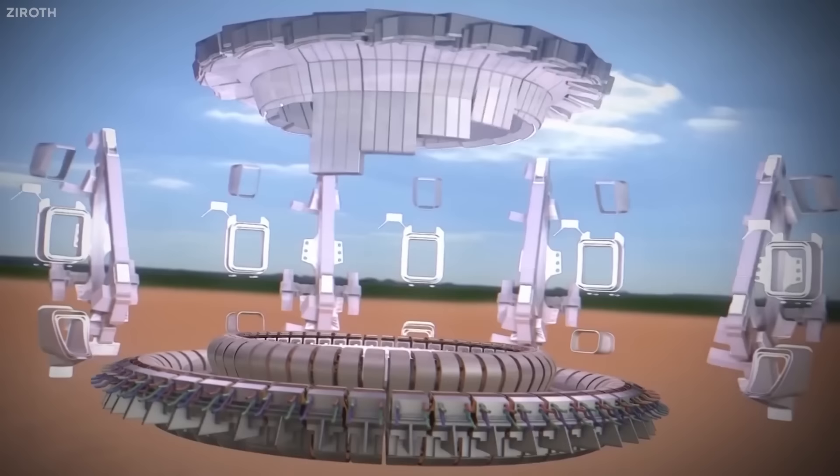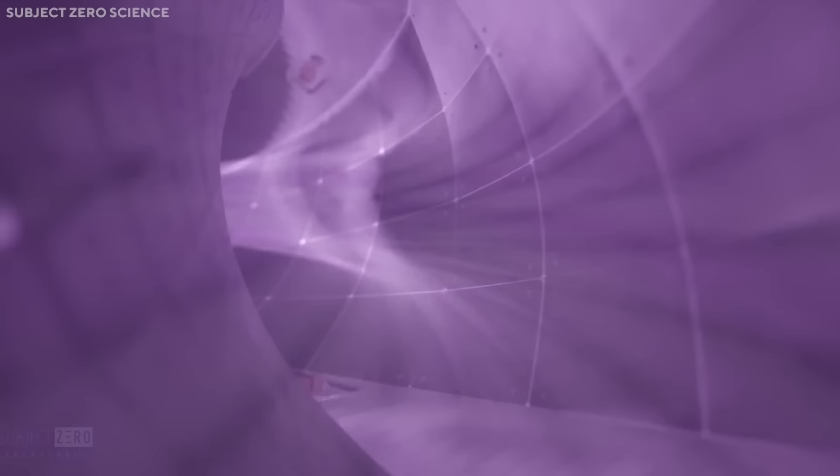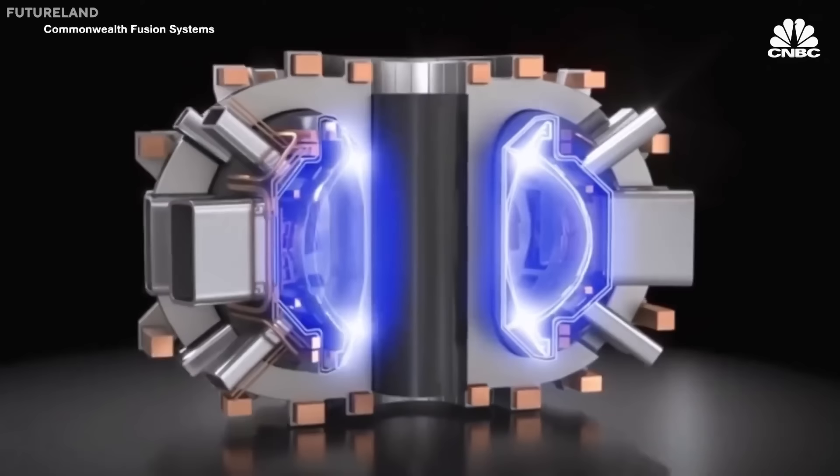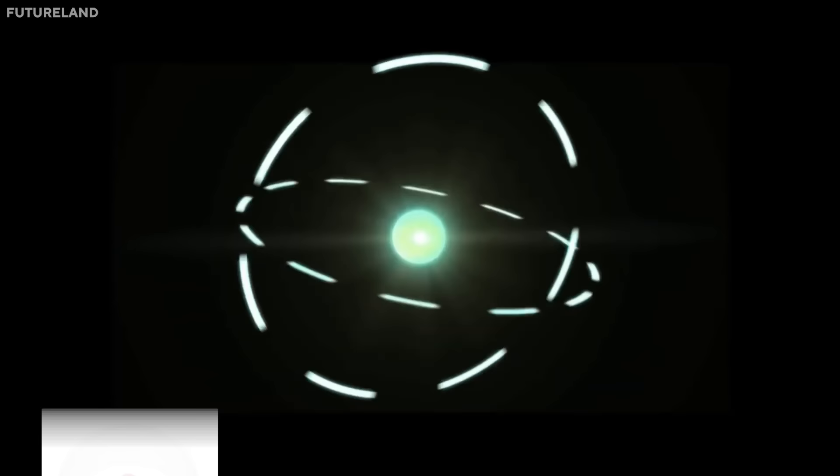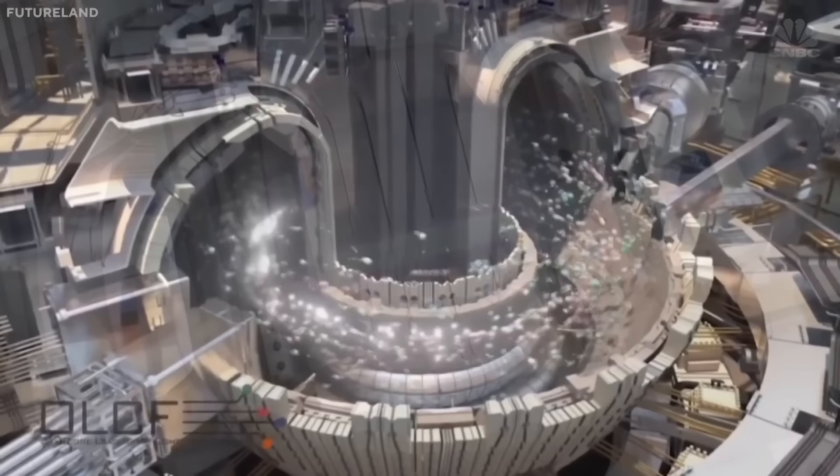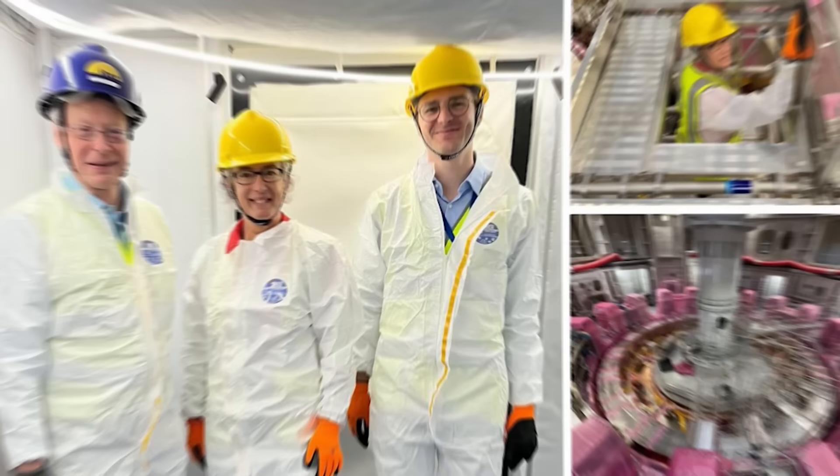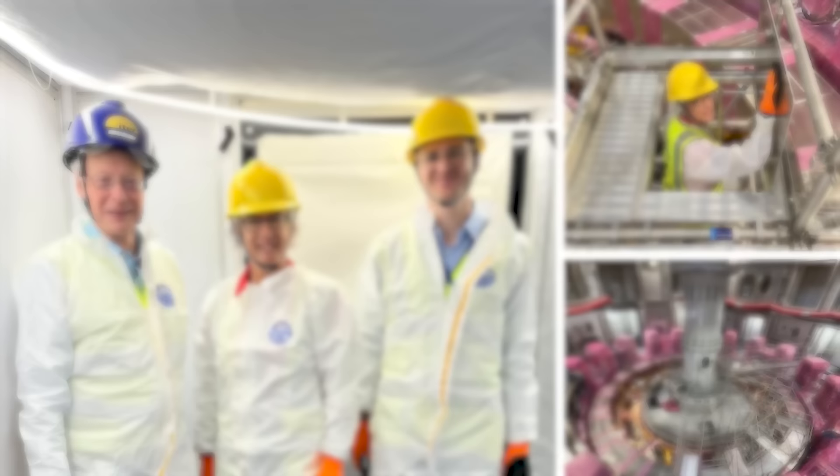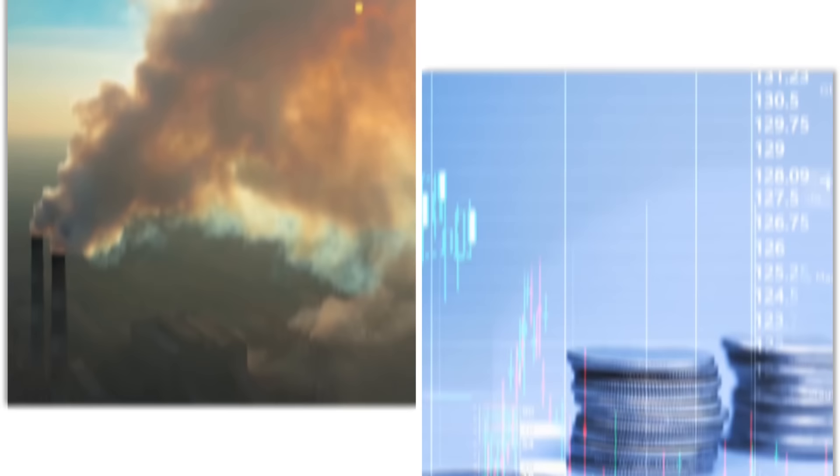In contrast, Gauss Fusion's goal is to build and operate a commercial nuclear fusion reactor that will produce electricity and generate revenue. Gauss Fusion's fusion power plant will be designed to be connected to the power grid and to operate continuously and reliably. Gauss Fusion's fusion power plant will also be self-sufficient in tritium, as it will use advanced tritium breeding modules that will produce more tritium than it consumes. Gauss Fusion's fusion power plant will also have a higher power output and efficiency than ITER, as it will use high-field magnetic confinement fusion and optimized plasma parameters. Gauss Fusion's fusion power plant will also have a lower cost and environmental impact than ITER, as it will use smaller and simpler tokamaks and existing infrastructure.